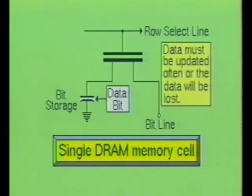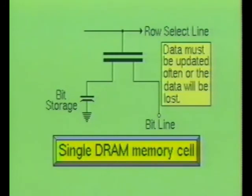Due to the small size of the capacitor used to store the bit of information, the dynamic random access memory device must be updated frequently. The storage capacitor can only sustain its charge for a few milliseconds. Therefore, each memory location must be refreshed about every two milliseconds. If the cell is not refreshed, it will simply lose its data.